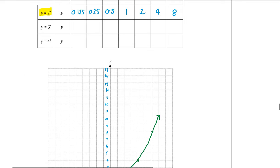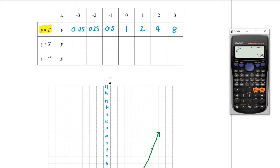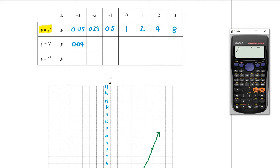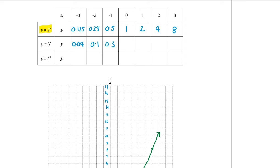Let's have a look at the next one. It's 3 to the power of x. So 3 is now the base. 3 to the power of minus 3 is 0.04, to the power of minus 2 is 0.1, to the power of negative 1 is 0.3. 3 to the power of 0 is 1. 3 to the power of 1 is 3. 3 to the power of 2 is 9. And 3 to the power of 3 is 27.